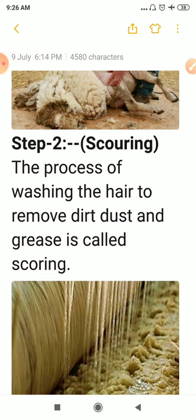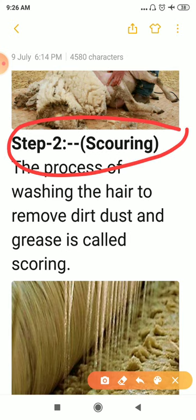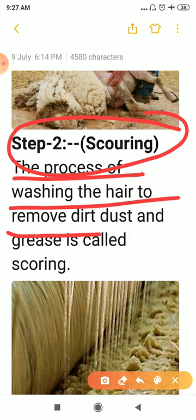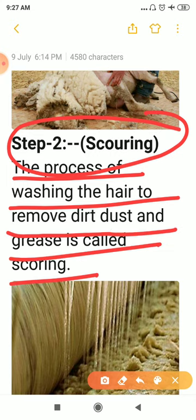The second step is scouring. When we obtain the fleece of the sheep, it contains dirt, dust, and grease, which have to be removed. The process of washing the hair to remove dirt, dust, and grease is called scouring. So the first step is shearing and the second step is scouring.